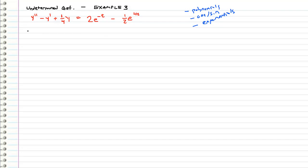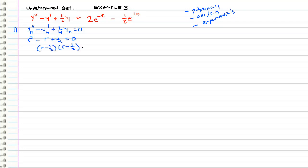Let's go ahead and work through this example. Step one: find the homogeneous equation. The homogeneous equation satisfies this equals zero. We have repeated roots — r is equal to one half and r is equal to one half. So the solution is going to be of the form c1 e to the one-half t plus c2 times t e to the one-half t.